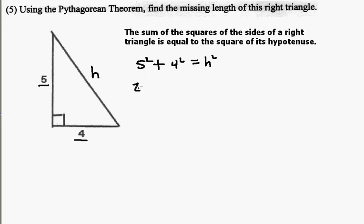So we have five squared is twenty-five. Four squared is sixteen. Equals H squared. Twenty-five and sixteen is forty-one.